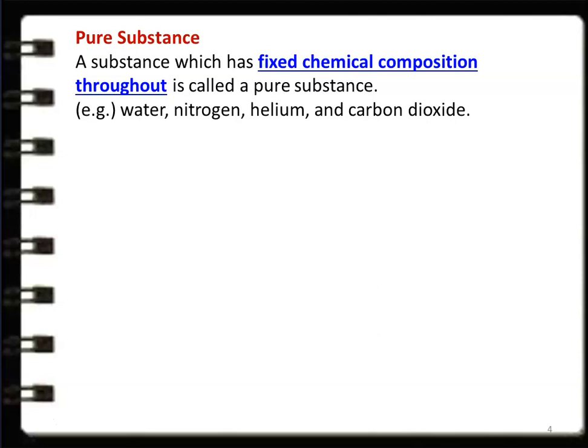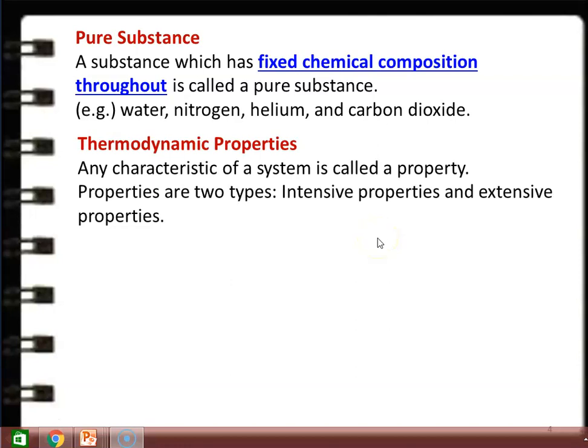Carbon dioxide exists in gaseous form and can be cooled to very low temperatures to make it a solid. Then thermodynamic properties: we defined thermodynamic properties earlier. Any characteristic of the system is called a property — pressure, volume, temperature. The system is defined by its properties, by its characteristics, and those characteristics are called properties.